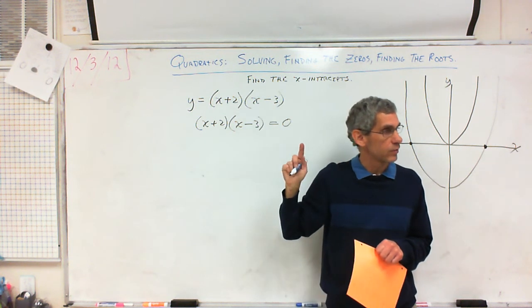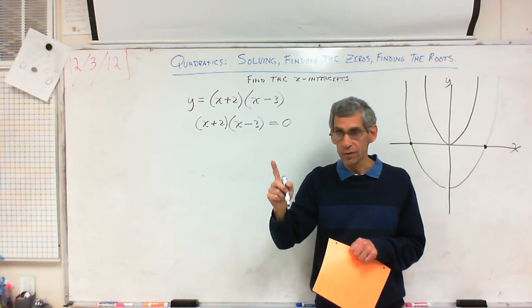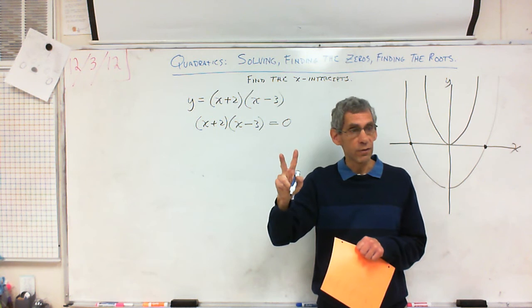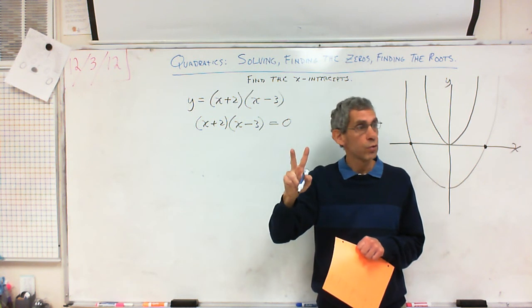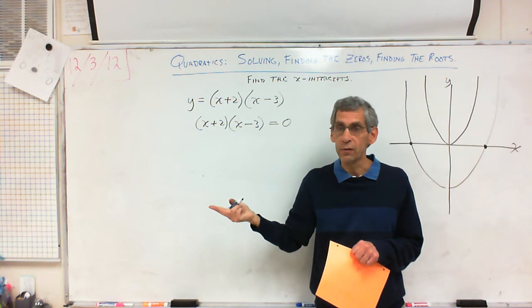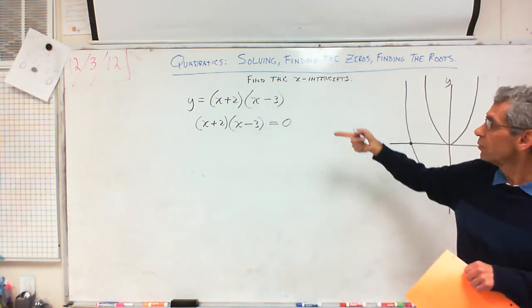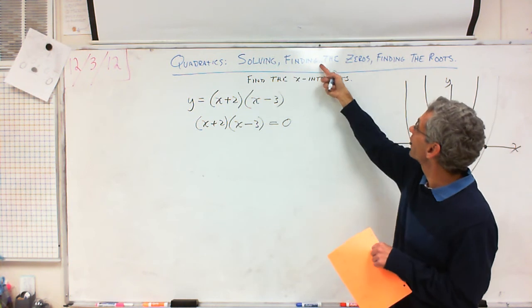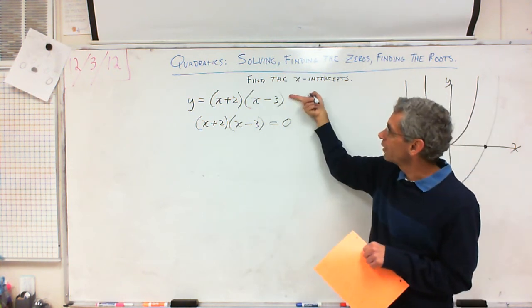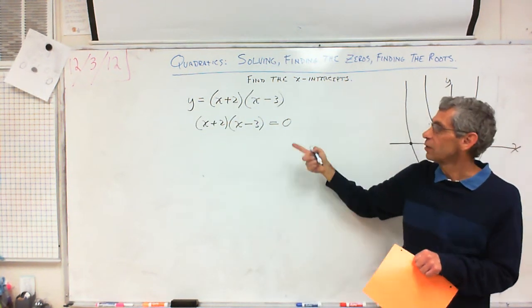Remember when we talked about systems of equations? If you have one unknown and one equation, you can always solve it. If you have two unknowns, you need two equations. If you have three unknowns, three equations — ten unknowns, ten equations. So here we have two unknowns, but since they said find the zeros or solve, I know they're saying when y is zero. So I'm just setting y equal to zero.